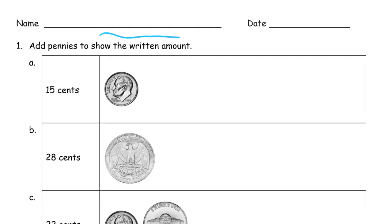And we're just adding pennies to show the written amount. So what we have to do here is look at this. This has to be 15 cents, whatever these coins add up to. Well we have a dime, right? A dime is 10, so we need 15, we need 5 more cents. So the only way to get that is, we have to add pennies.